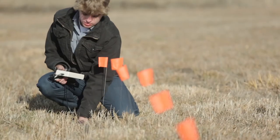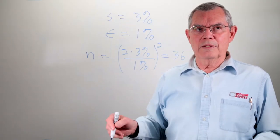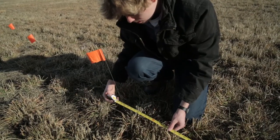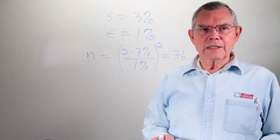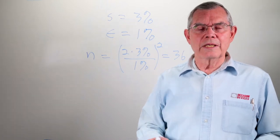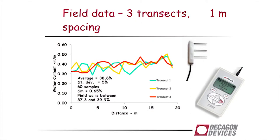We went along and took samples every meter along these transects. The result of that sampling is shown in this slide. You can see it looks about like you would expect — we've got some variation, with a mean value and some variation around it. The transects showed variability but seemed to show about the same result for each transect.